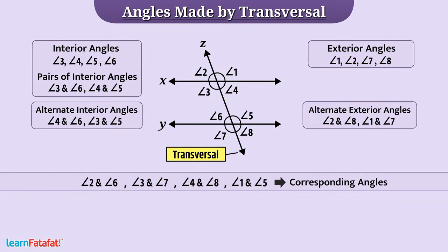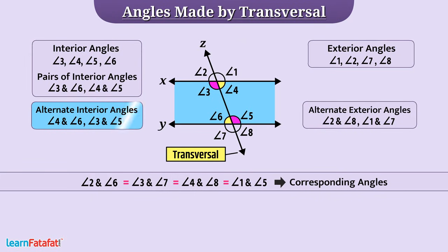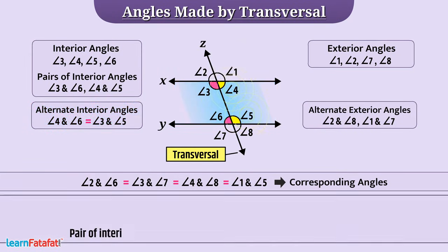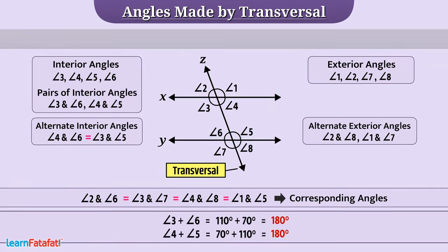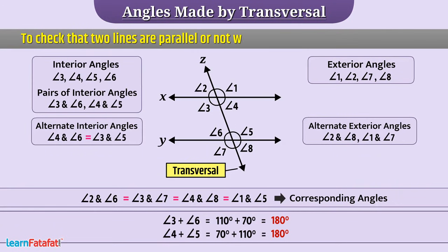We know that two lines which never meet each other are called parallel lines. When a transversal intersects two parallel lines, then all pairs of corresponding angles are equal, all pairs of alternate interior angles are equal, and the pair of interior angles on the same side of the transversal are supplementary. Therefore, to check that two lines are parallel or not, we should check for these properties.